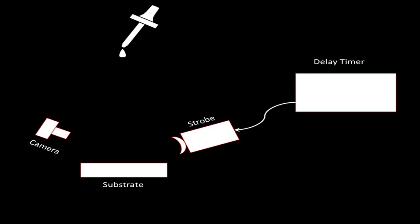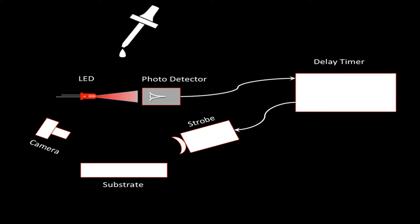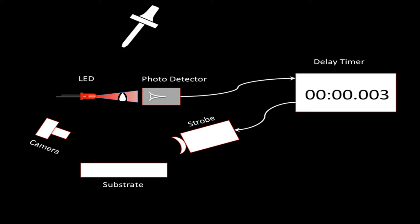Here's the setup: camera, substrate, strobe, delay timer ready to fire the strobe. We need a way to tell the delay timer when to start its countdown, and we're going to use an LED for that. The LED shines on a photodetector, which gives an electrical signal when it does or doesn't see the light. Right now it's saying it sees the LED light, so it tells the delay timer to wait. We drop the drop. When the drop breaks the LED beam, that starts the countdown timer. The drop is still falling, the timer counts down to zero — flash — we've got the image.